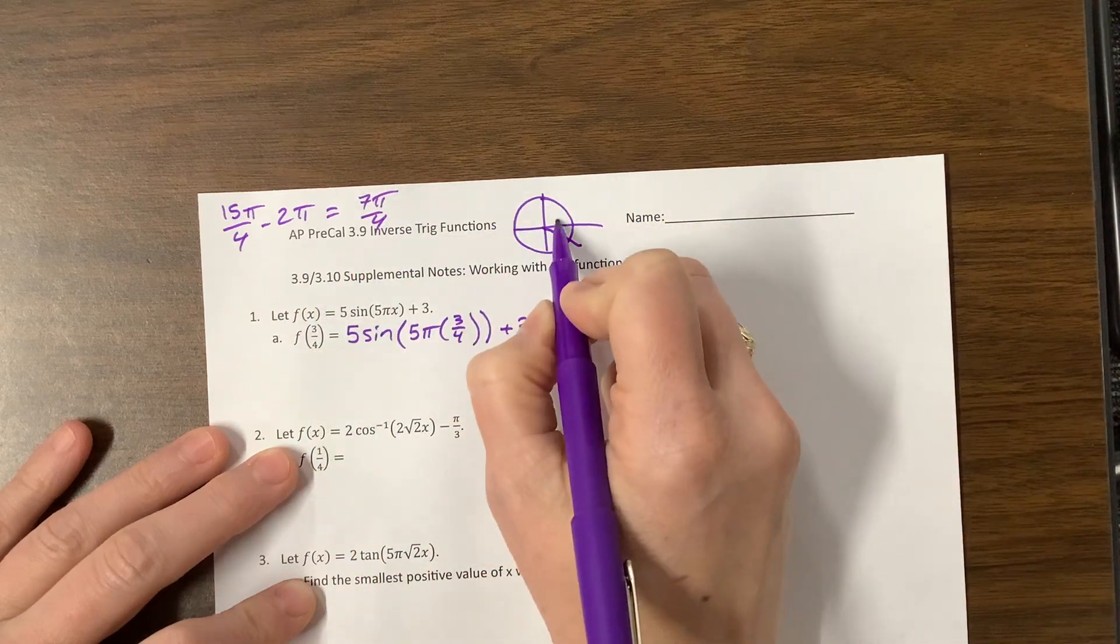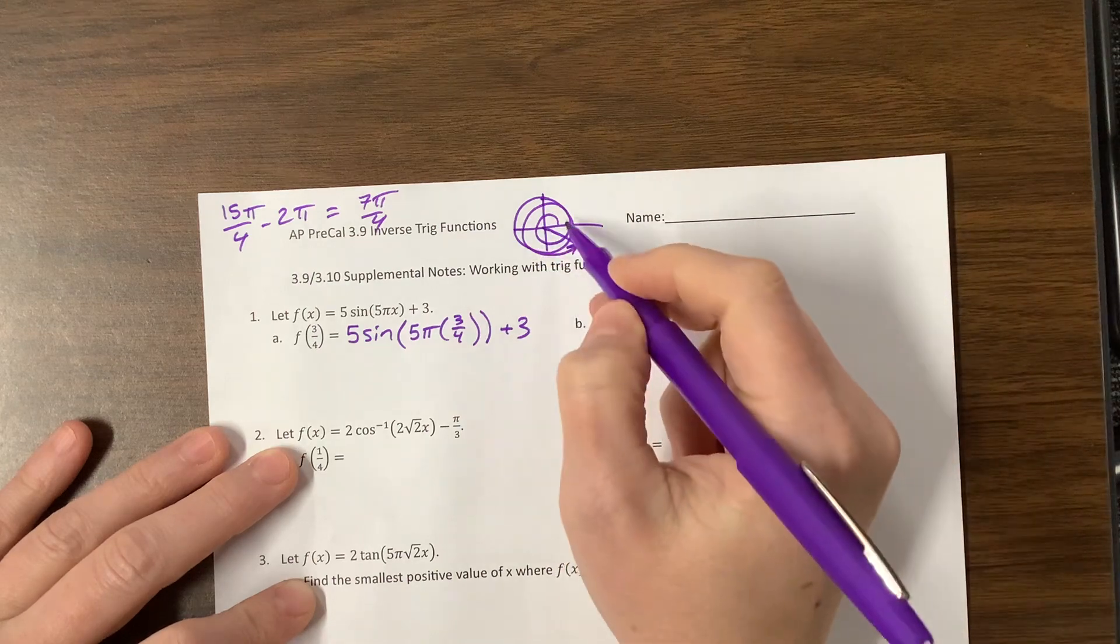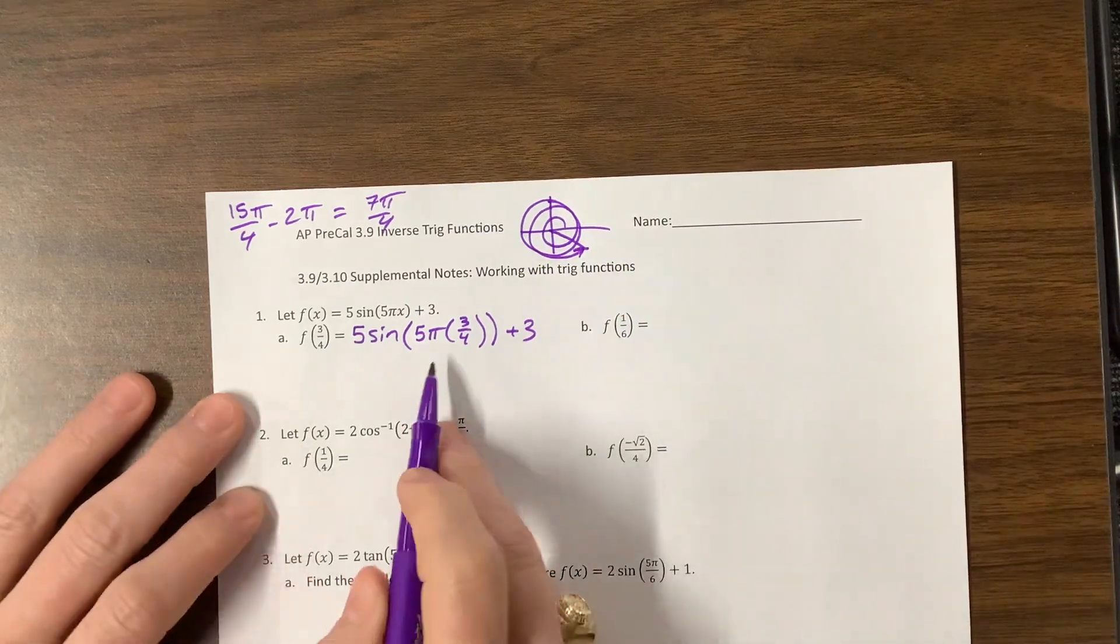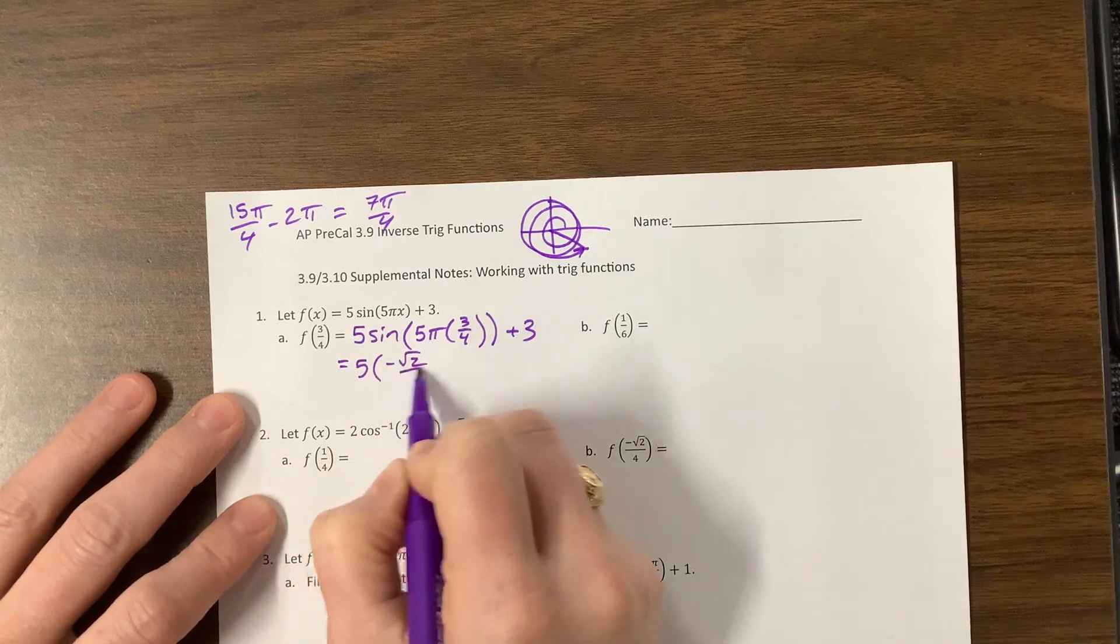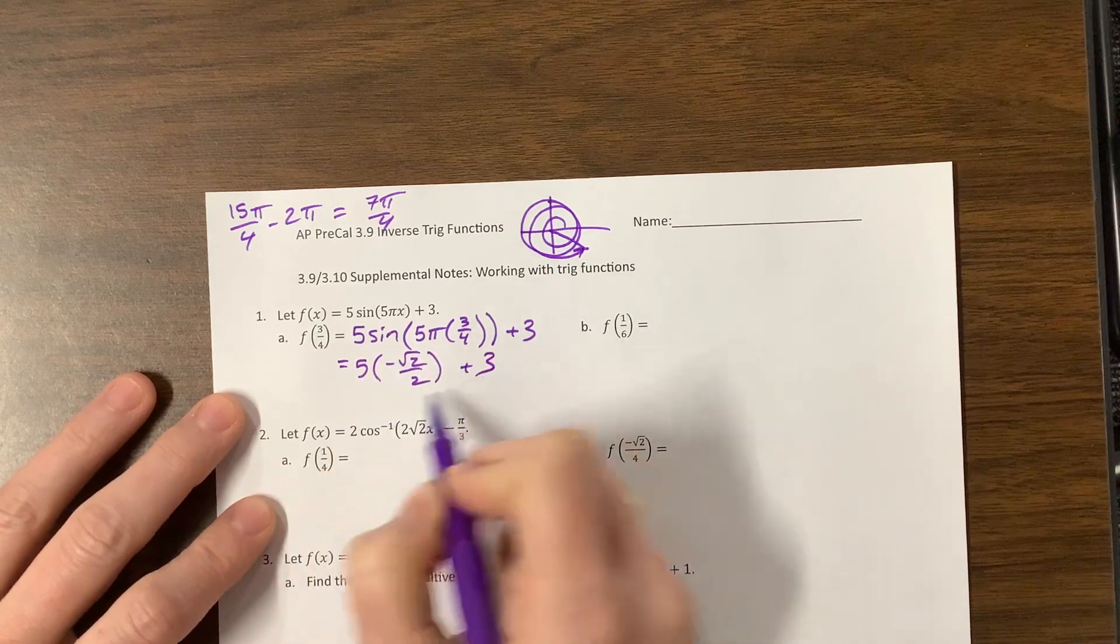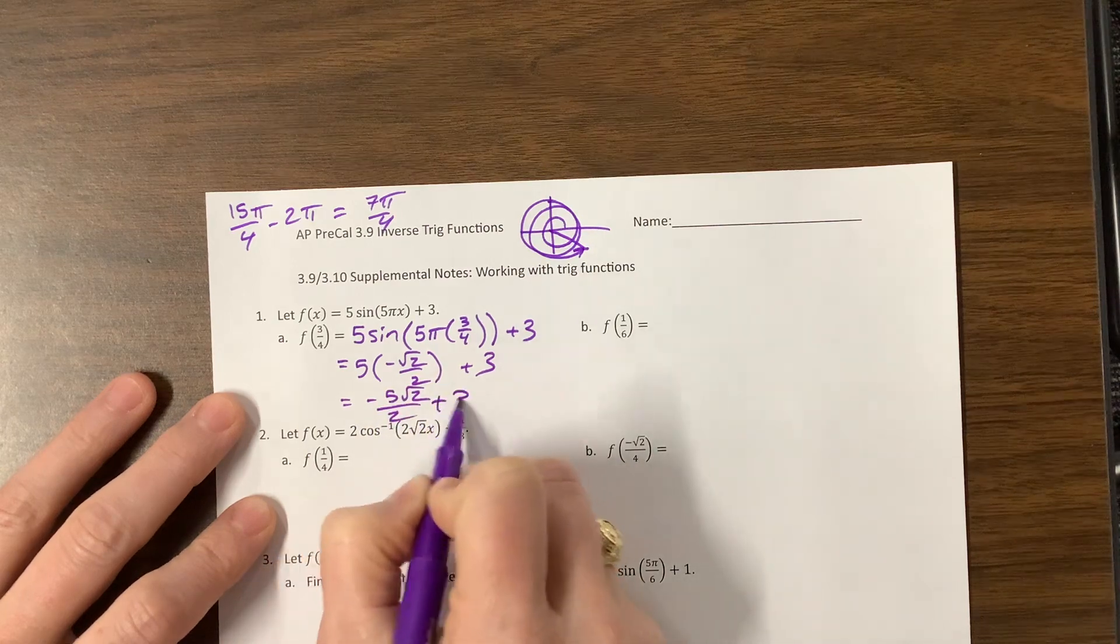Sine of that, this is going to be 5 times negative √2/2 plus 3. So -5√2/2 plus 3 is a great answer.